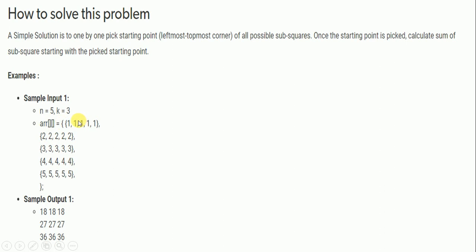The output is: 18 18 18 / 27 27 27 / 36 36 36. The first sub-matrix considered starts from the top-left corner and spans a 3×3 region with elements 1 1 1 / 2 2 2 / 3 3 3. The second sub-matrix starts from the second element in the same row.